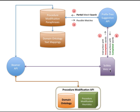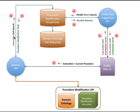Once the user selects a completed instruction, or chooses to write one of their own, the instruction along with the current procedure is sent to the Beamer API. The Beamer API does a full instruction search based on the procedure modification paraphrases and the domain ontology text mappings, and returns a set of procedure modification tasks. These tasks, along with the current procedure, are sent to the Procedure Modification API to check for validity of the modification tasks, perform the modification, and add alternative procedure representations based upon its procedure modification heuristics.